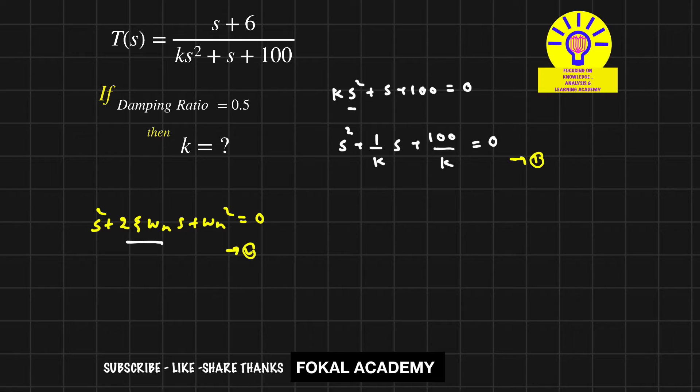Similarly, ωₙ²=100/k, so ωₙ=√(100/k). Substitute this ωₙ value in the equation.